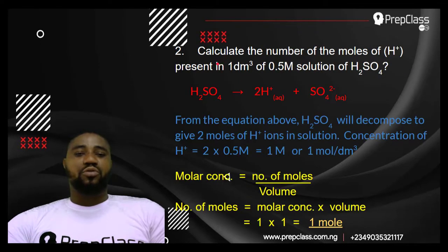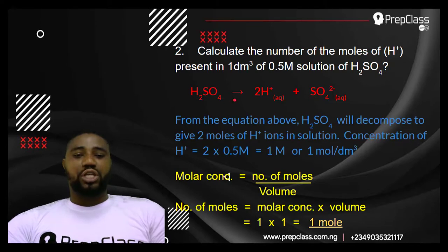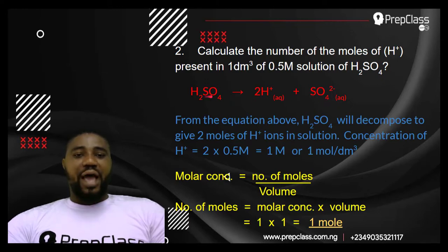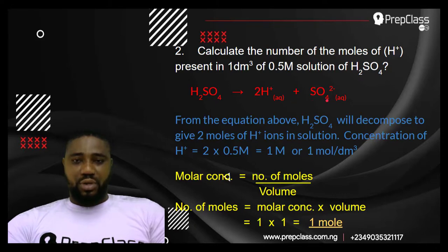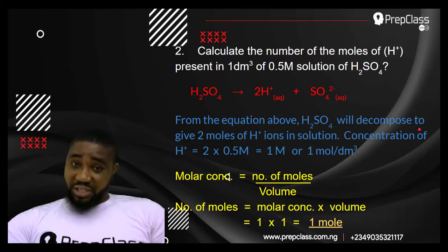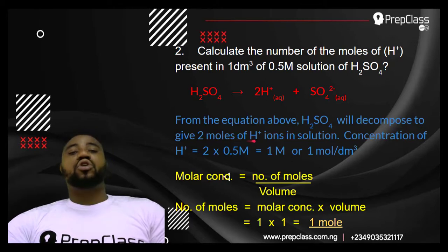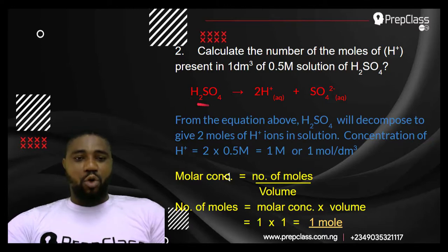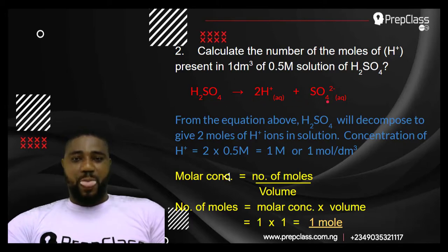The first thing you have to do is assume that H₂SO₄ dissociates. H₂SO₄ dissociates to give hydrogen ions plus sulfate ions. Writing the equation properly: H₂SO₄ dissociates to give 2 hydrogen ions plus 1 sulfate ion. So 1 mole of H₂SO₄ dissociates to give 2 moles of hydrogen ion and 1 mole of sulfate ion.